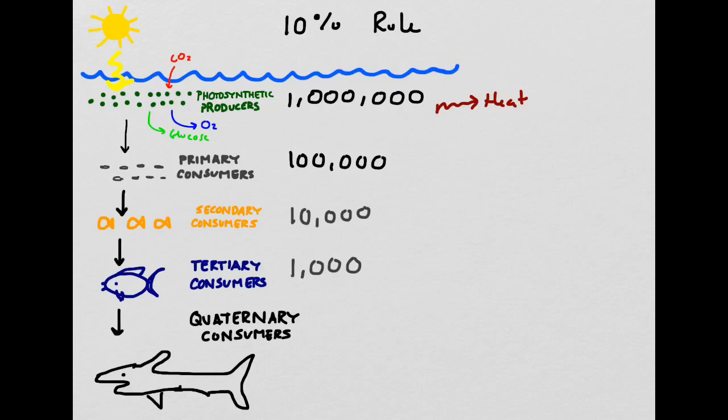Not many ecosystems can support quaternary consumers, and it's probably pretty easy to guess why. If we follow the 10% rule, a population of 1,000,000 producers can only support 100 quaternary consumers, and that's if conditions are ideal.